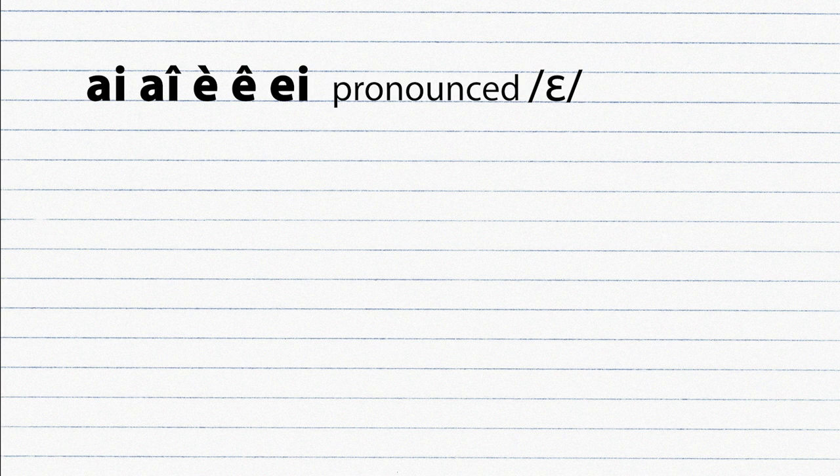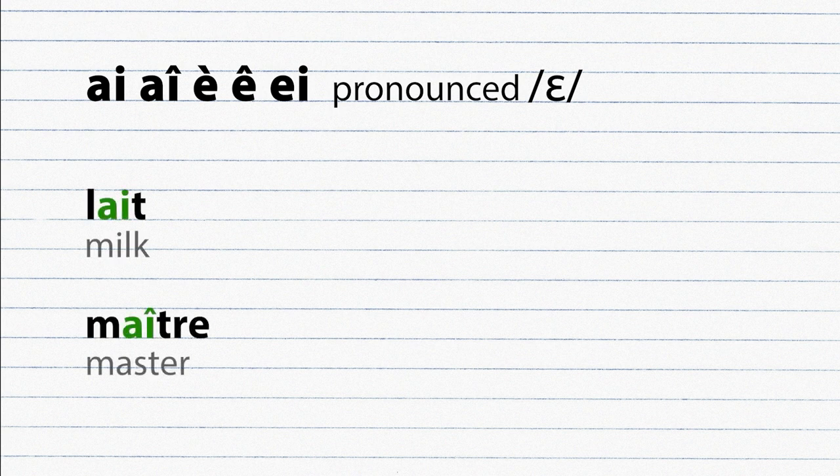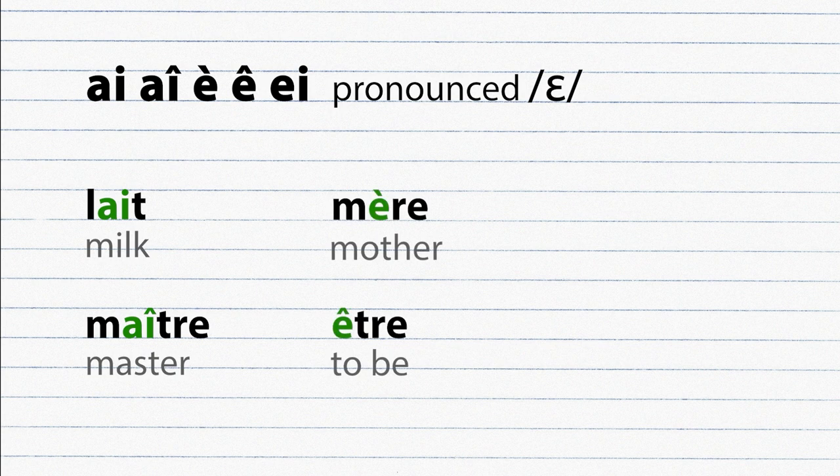These are all pronounced as E. Les, maître, mer, être, neige.